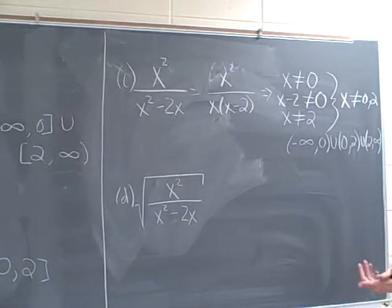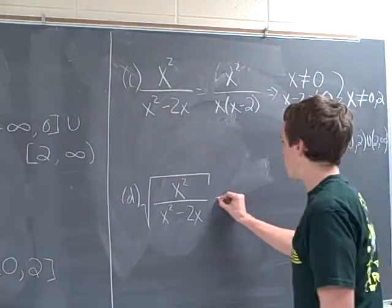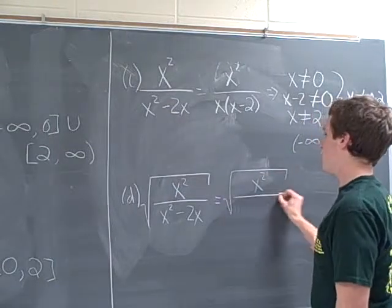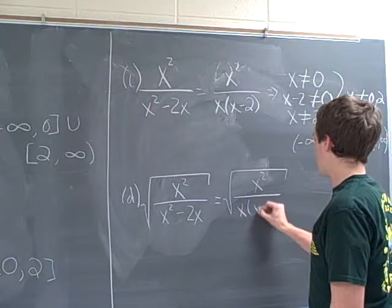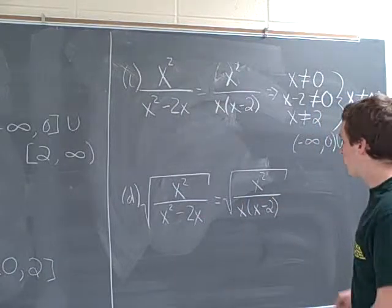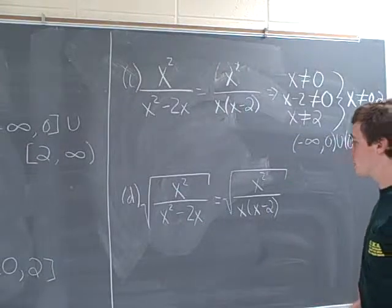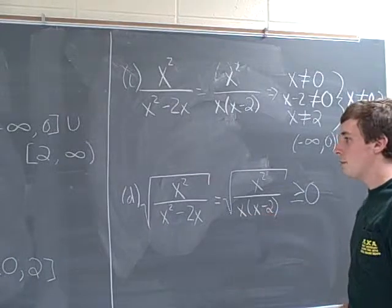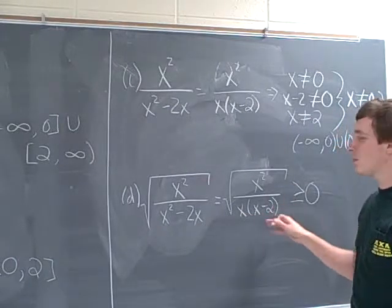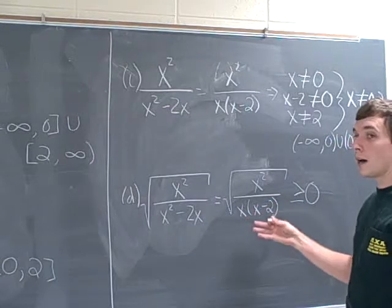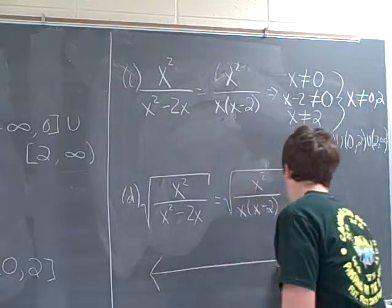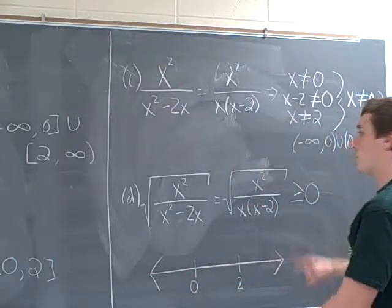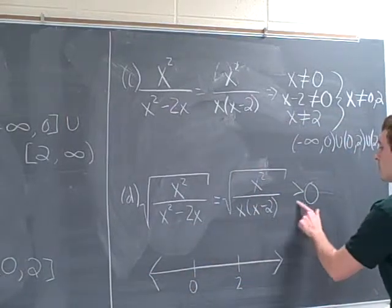And then the last one here, we can also do in the form of a sign chart. We'll rewrite this. Square root of x squared over x times x minus 2. Alright, we can do it the same way. We know that this has to be greater than 0. And our critical values, again, will be 0 and 2. Now note this time that it will not be inclusive because they're on the bottom, they're on the denominator. So we do our little number line here. So actually I could erase this and just say greater than 0. So it can't be equal to.